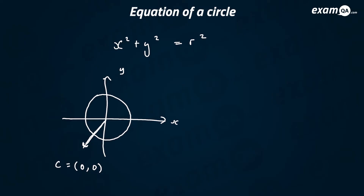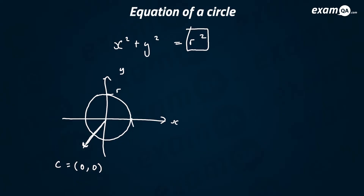The radius of this circle is the square root of the right-hand side. So square root of r squared is just r. So the circle extends to r, r, minus r, and minus r, because the radius is r.